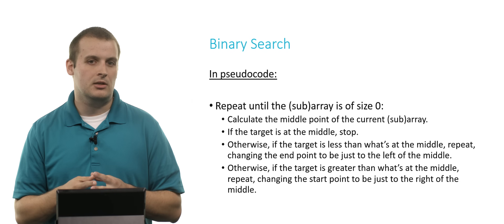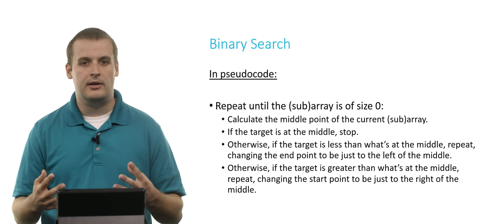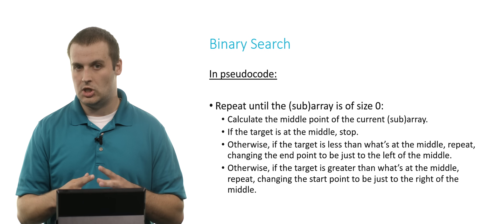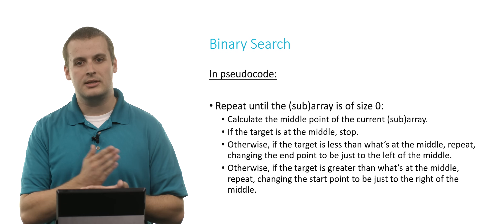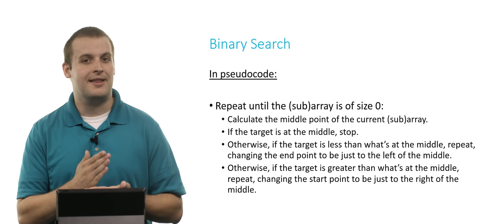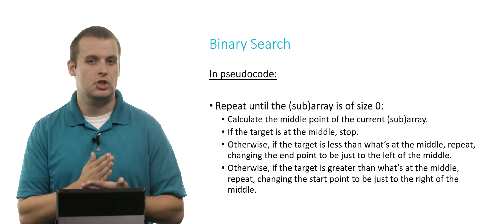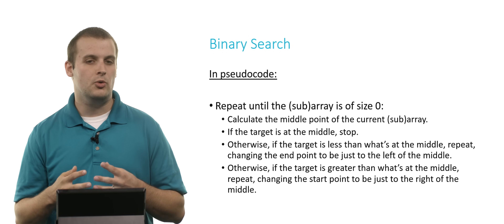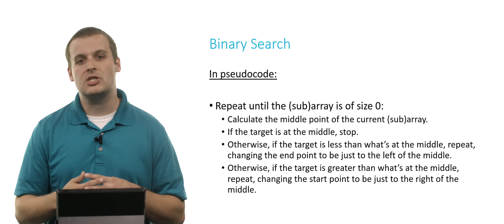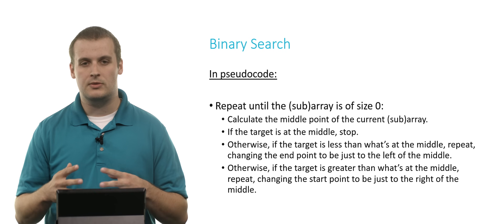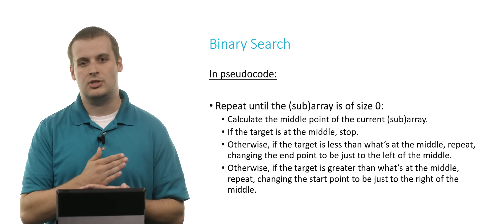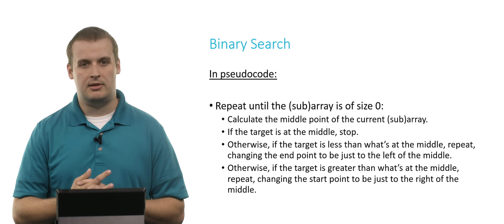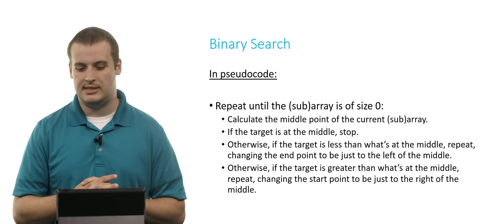We know that the middle was too high, so the target must exist — if it exists at all — somewhere to the left of the midpoint. So we set the array location just to the left of the midpoint as the new endpoint. Conversely, if the target is greater than what's at the middle, we do the same process but change the start point to be just to the right of the midpoint we just calculated, then begin the process again.